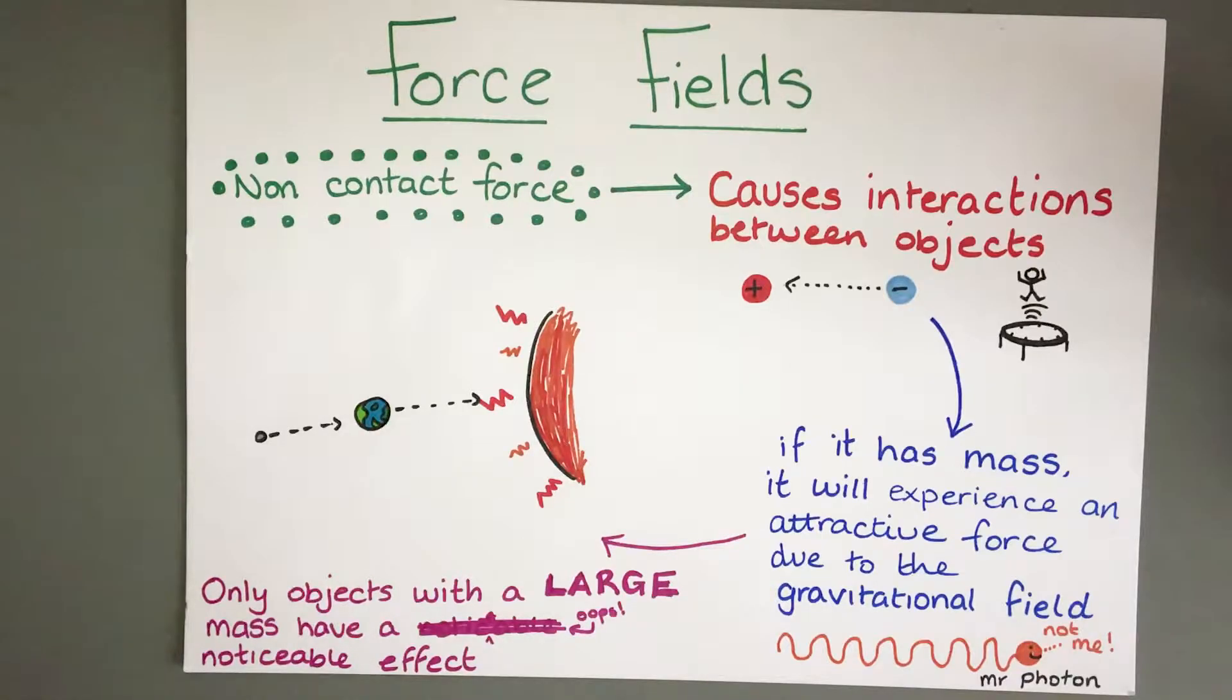Force fields cause those interactions between objects. For instance, if you've got a negative charge it will move towards a positive charge due to a force. Gravity is because of the gravitational field. It causes objects to be attracted to each other due to their masses.